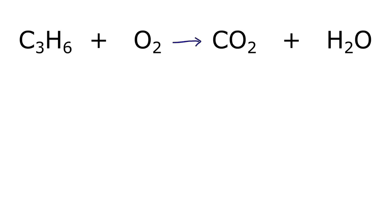To balance C3H6 plus O2 yields CO2 plus H2O, let's first count up the atoms on each side of the equation. We have three carbons, we have six hydrogens, and we have two oxygens.